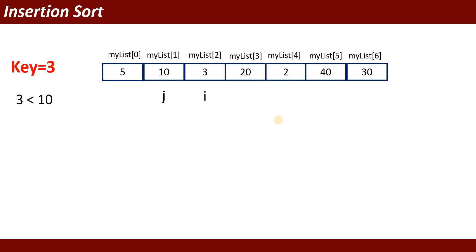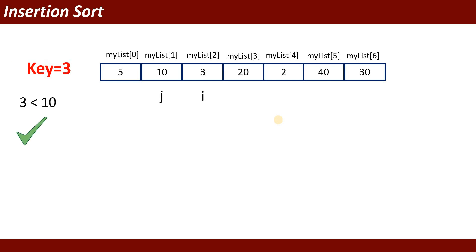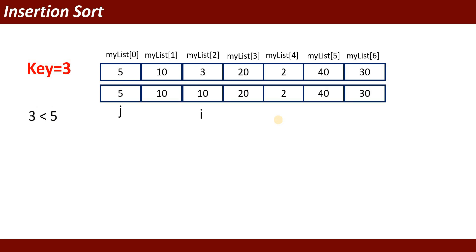Now key will get the value 3. It will check whether key is less than the value of j. The value of key is 3 and value of j is 10. It checks: is 3 less than 10? Yes, it is true. When true, the value of j shifts one position ahead — my_list[1] and my_list[2] both contain 10. Then j moves to the left, decremented to my_list[0].